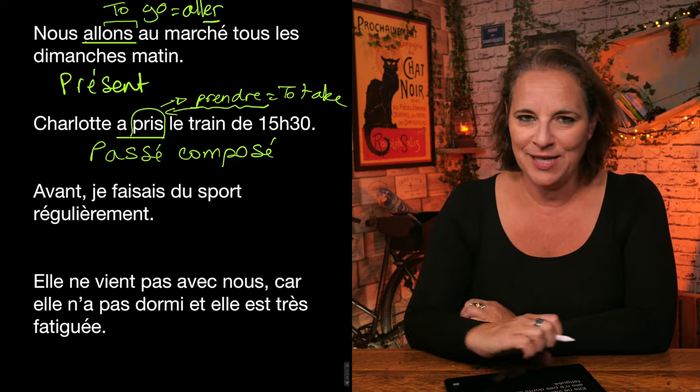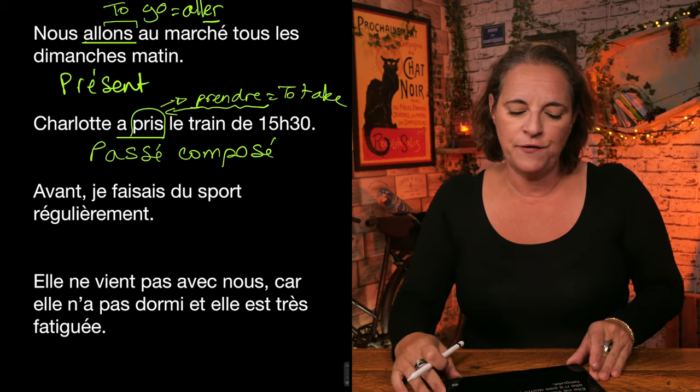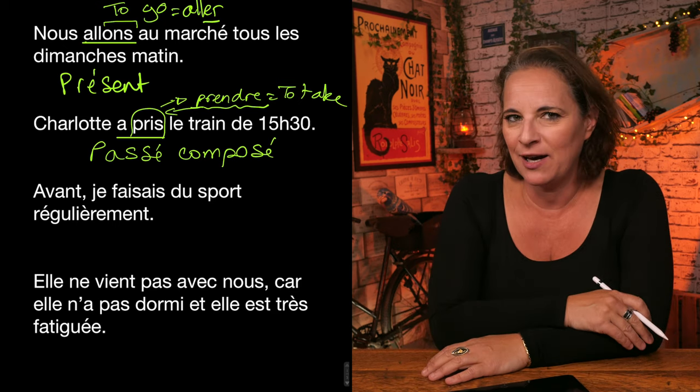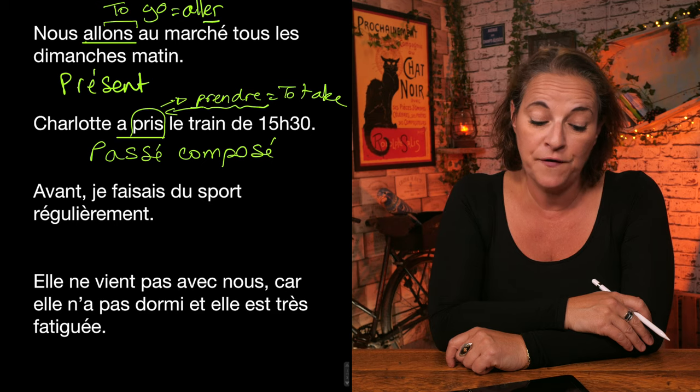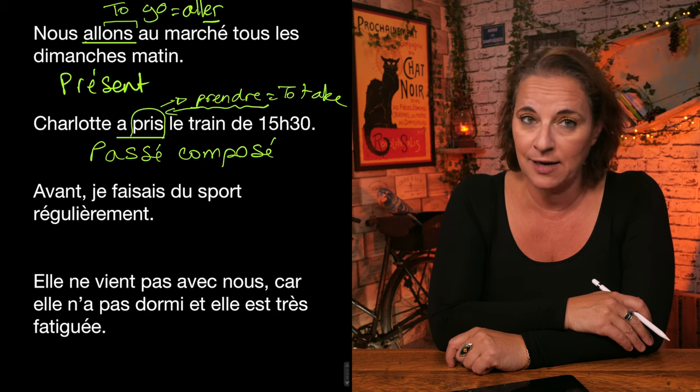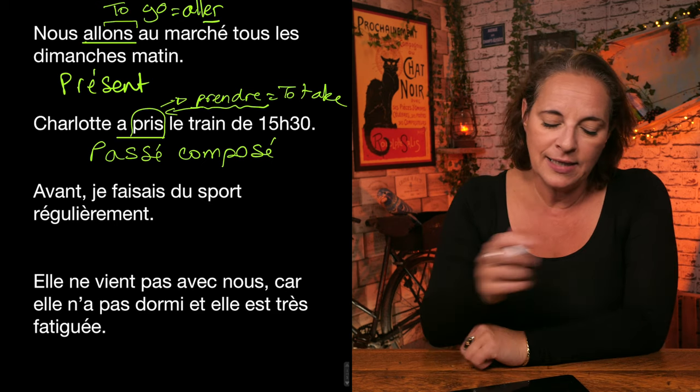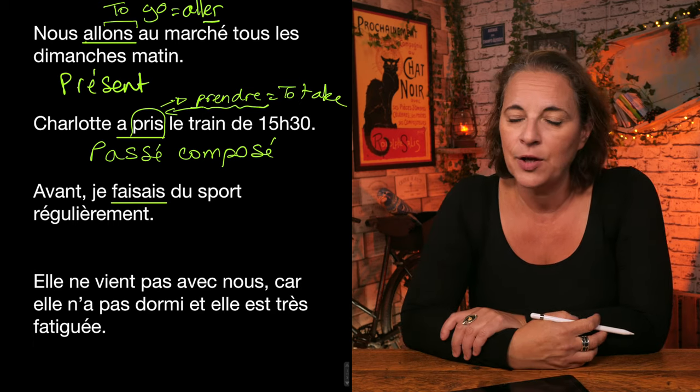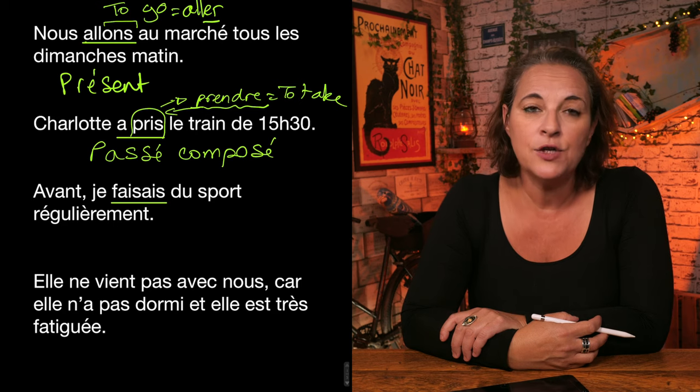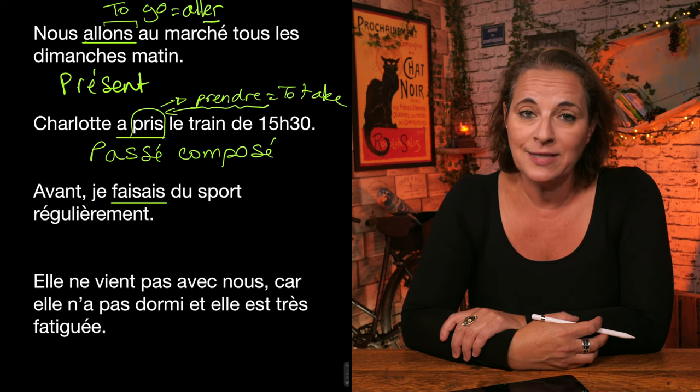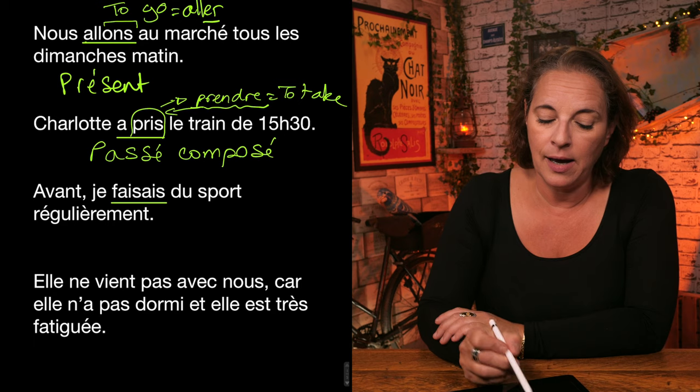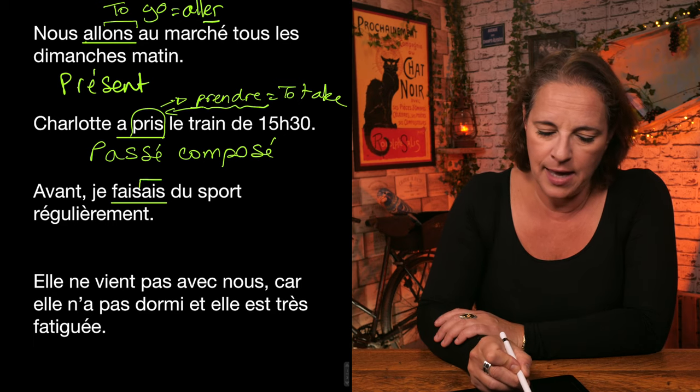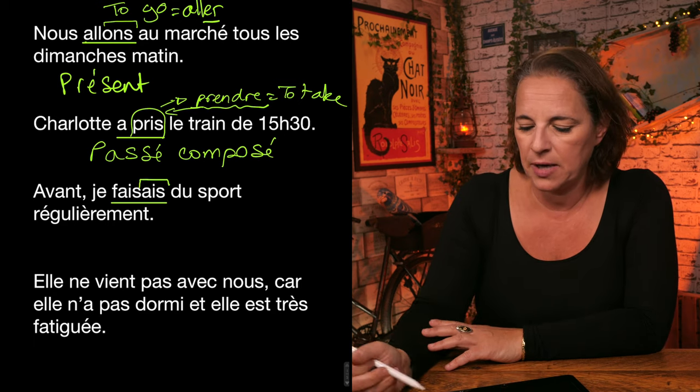So have a look at the next one. Avant, je faisais du sport régulièrement. Avant, je faisais du sport régulièrement. We identify the verb. Can you see it? It's here. I can see it here. Je faisais. Je faisais. But what tense is it? Well, identify the ending. A-I-S. Let's have a look. Is it here? No. I can't see it here. No.